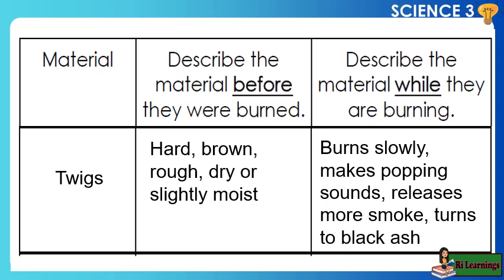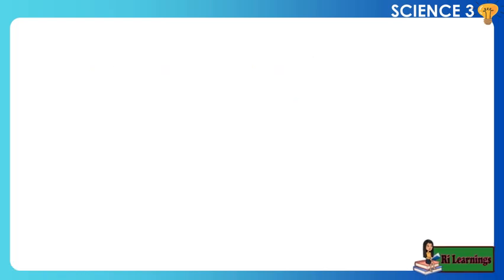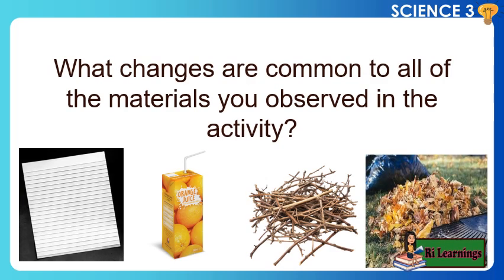Material: Twigs or small branches. Describe the material before it was burned — hard, brown, rough, dry or slightly moist. Describe the material while it is burning — burns slowly, makes popping sounds, releases more smoke, turns to black ash.